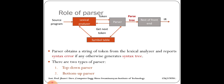Our first topic is the role of parser — basically what a parser does. The parser obtains a string of tokens from the lexical analyzer and reports a syntax error if any; otherwise it generates a parse tree. The lexical analyzer's output, which is a string of tokens, is taken as input by the parser. If there is a syntax error it reports it; otherwise the parse tree becomes the output that goes to the rest of the compiler phases, ultimately producing intermediate code.